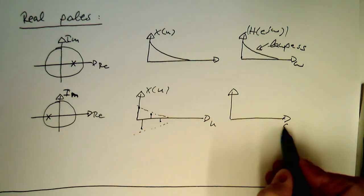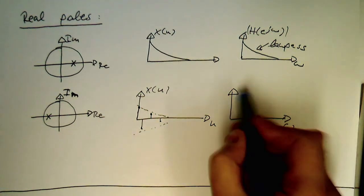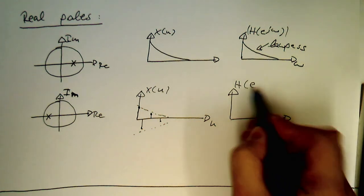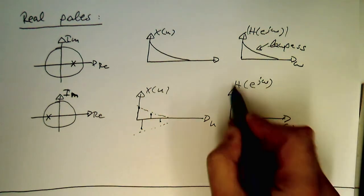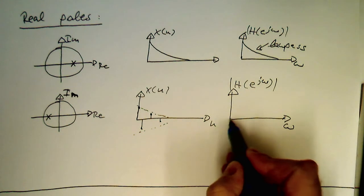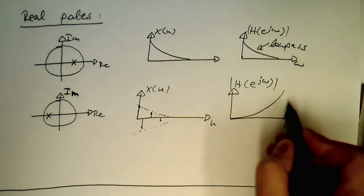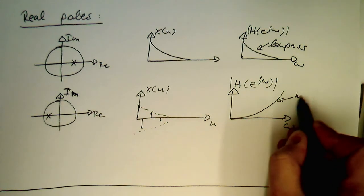So it's basically an alternating sequence which decays. And the frequency response of this one here, H to e to j omega, is this way. And this is a high pass.